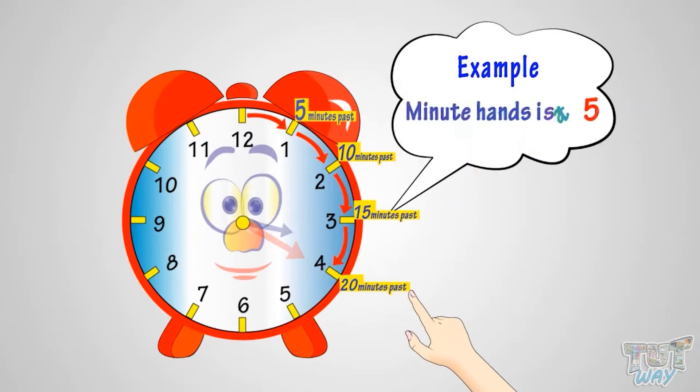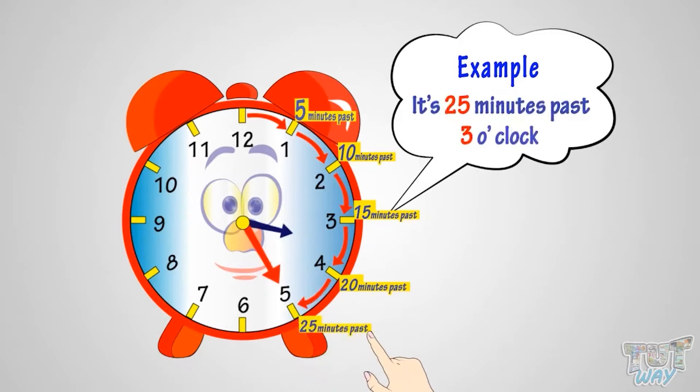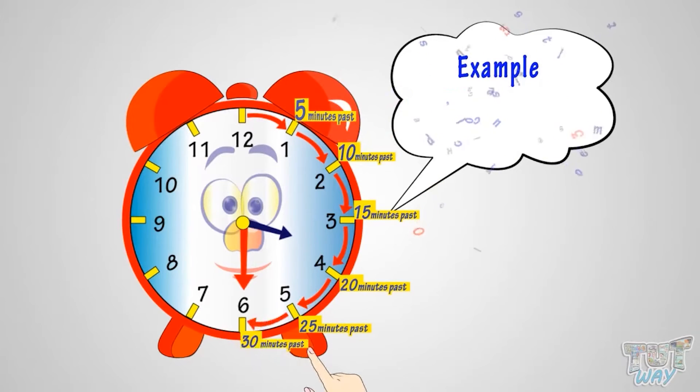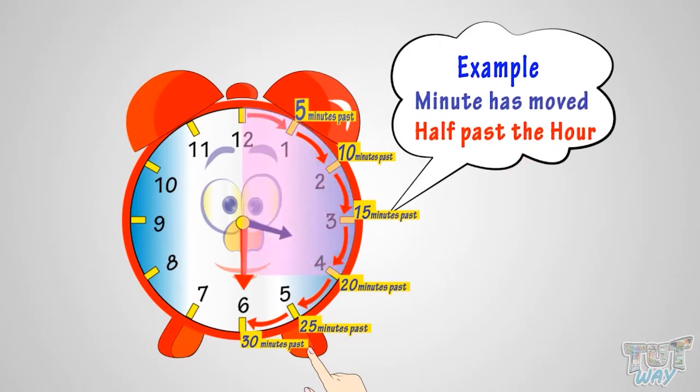Here, minute hand is at 6, so it's 30 minutes past 3, that we call half past 3. The reason is minute hand has moved half past the hour.